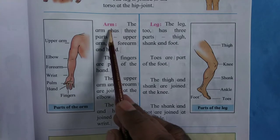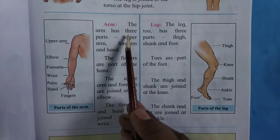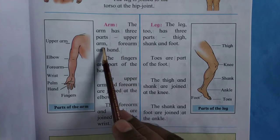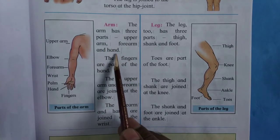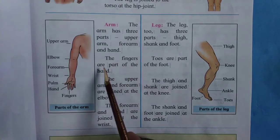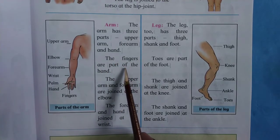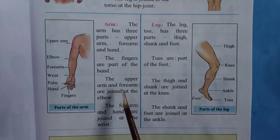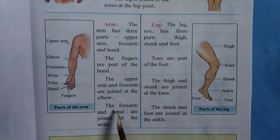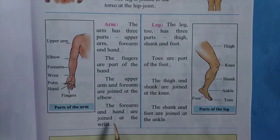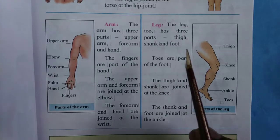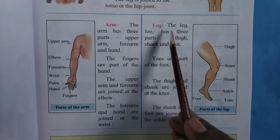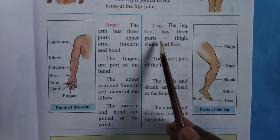The arm has three parts: upper arm, forearm, and hand. The fingers are part of the hand. The upper arm and forearm are joined at the elbow. The forearm and hand are joined at the wrist.